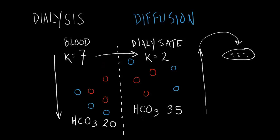So what happens is bicarb is actually delivered into the blood from the dialysate. And so we have balancing of potassium, we have balancing of bicarb.